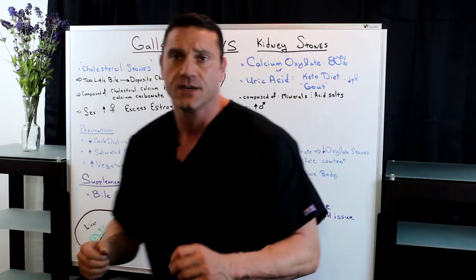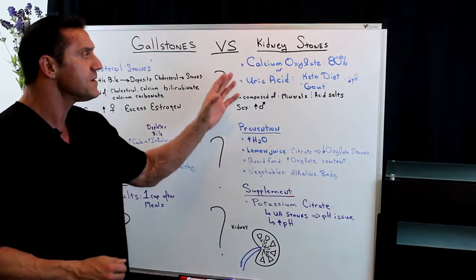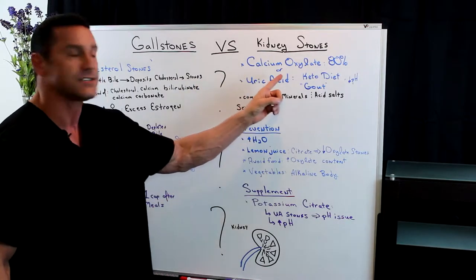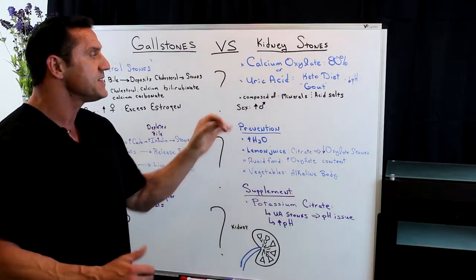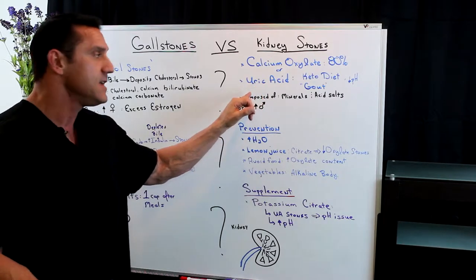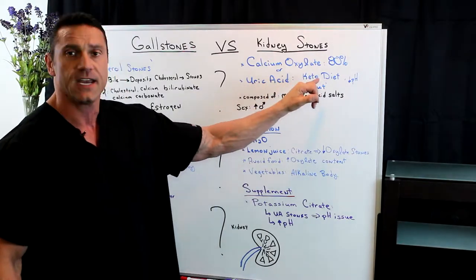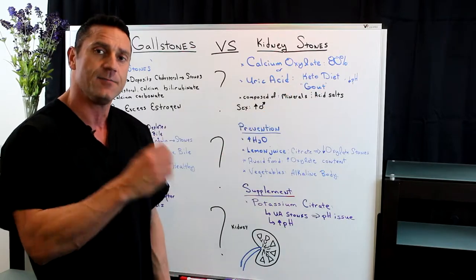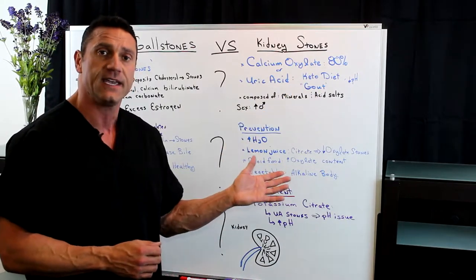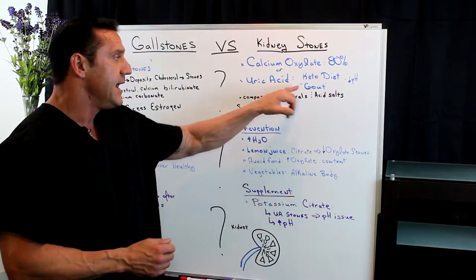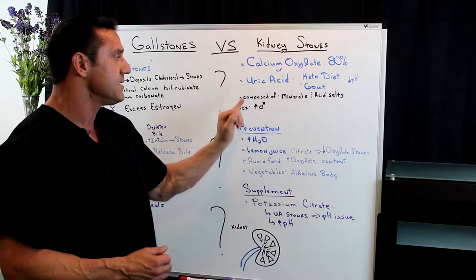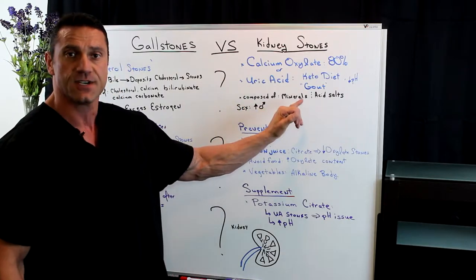Now, kidney stones. About 80% of kidney stones are made from calcium oxalate, and about 20% are uric acid. Uric acid stones are typically seen if you follow the ketogenic diet, because it creates a low pH between one and three — and this is also where gout is formed. Kidney stones are composed of minerals and acid salts.